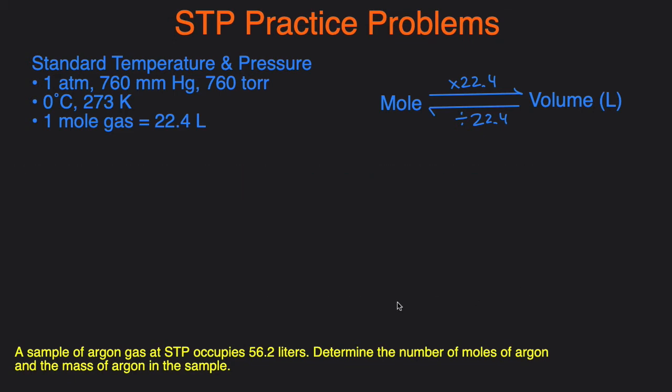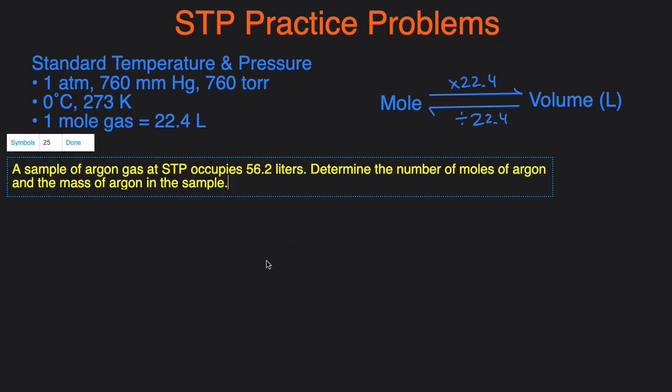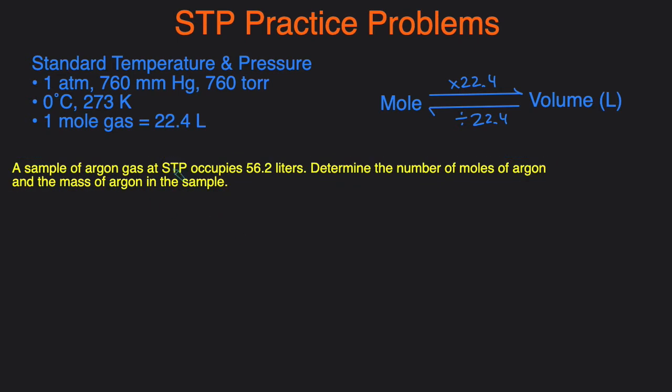That's how many liters the 2.34 grams of carbon dioxide will take up at STP. Let's take a look at our last example.